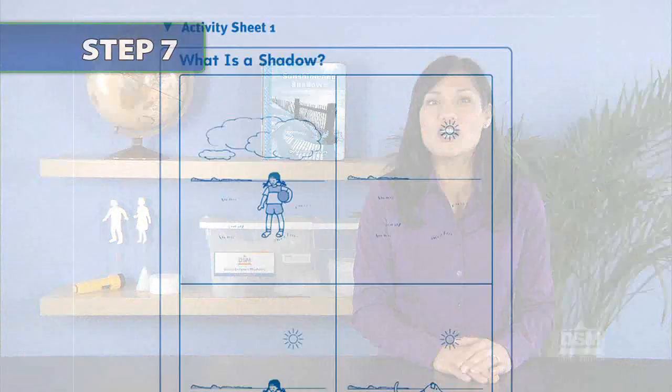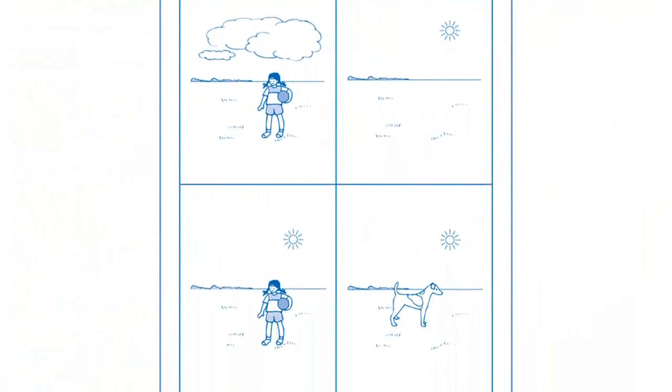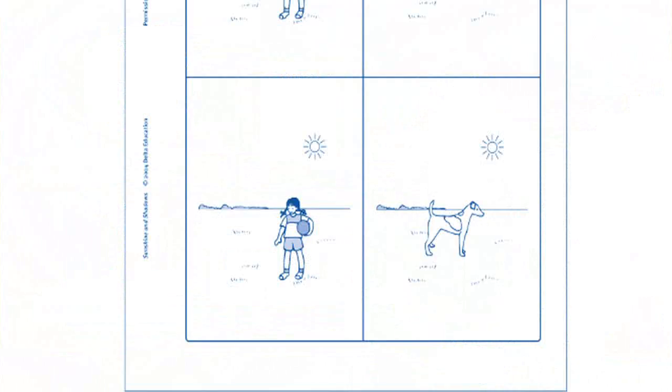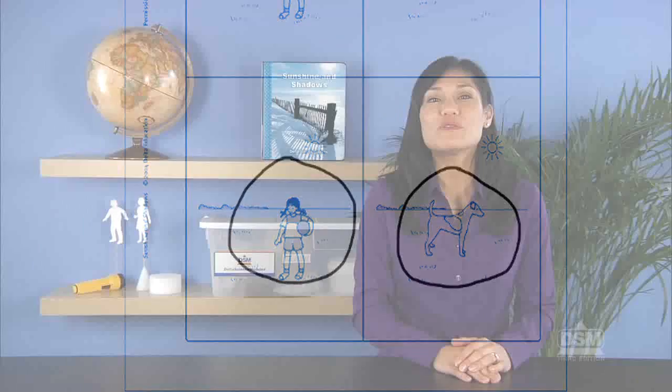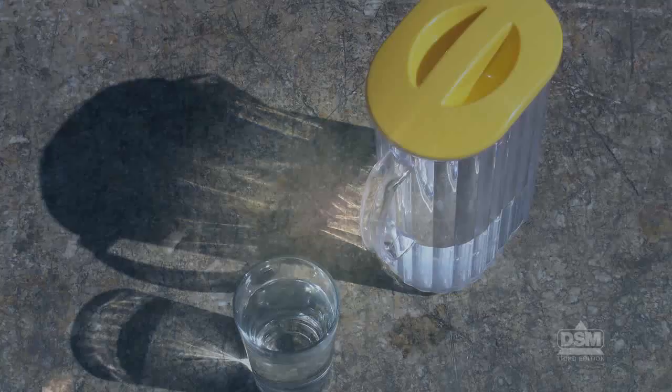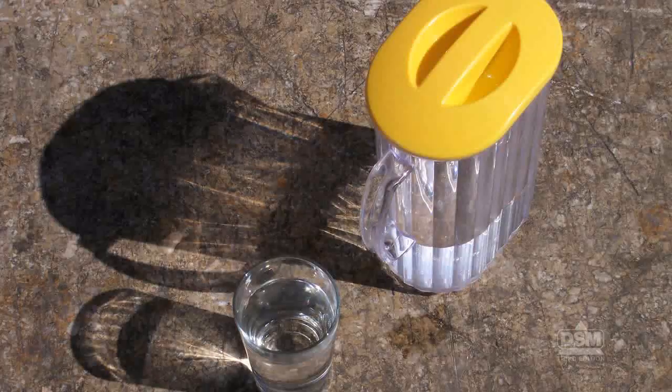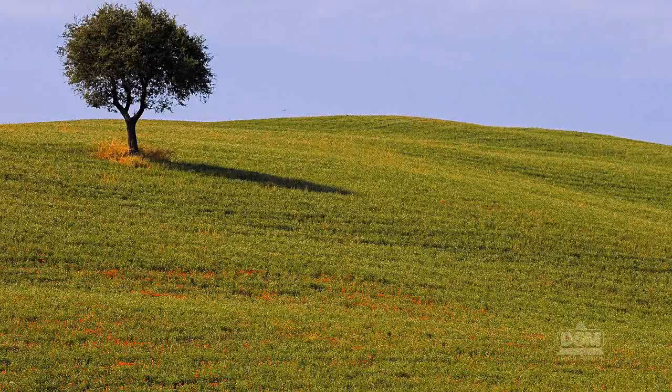Back in the classroom, give each student a copy of Activity Sheet 1 to fill out. Instruct students to circle a picture if a shadow of the child or dog can form in that picture, then review the answers with them. Make sure that they understand and remember the three things needed to produce a shadow: sunshine or light, an object to block the light, and a surface for the shadow to fall on.